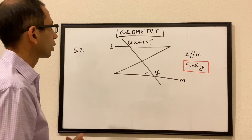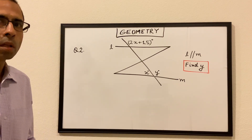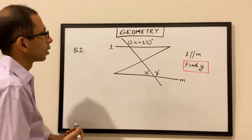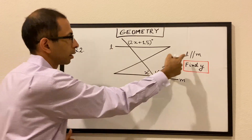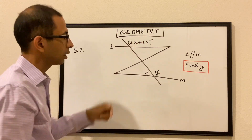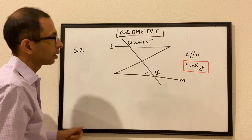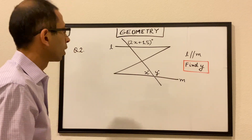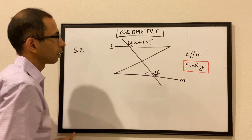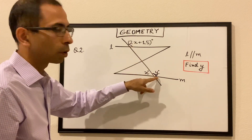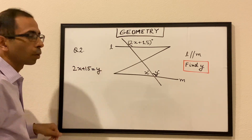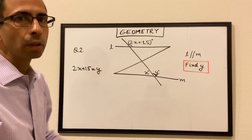Okay, this is our second question. So question 2: we have two lines, LN and M. L is parallel to line M. This angle over here is given to be 2x plus 15, this angle here is x degrees, this is y degrees, and we have to find the value of y. Now very clearly, L is parallel to M, so these two angles are corresponding to each other. So 2x plus 15 is equal to y — that's what we have to find essentially.